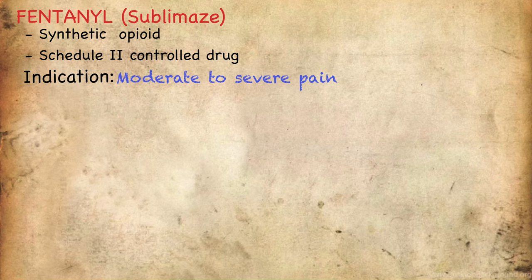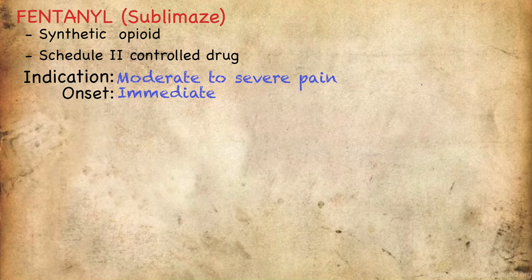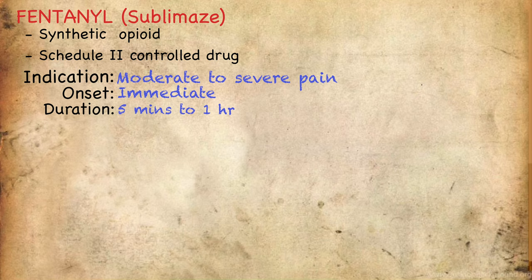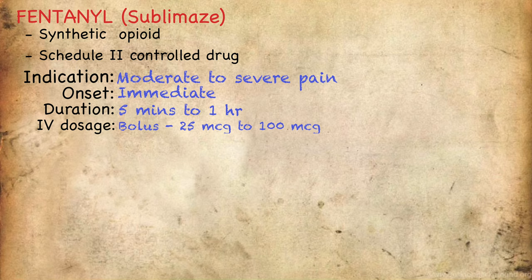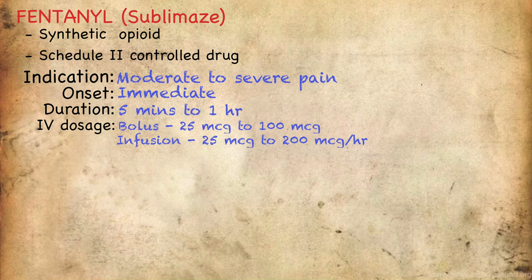Fentanyl can be administered intravenously, intramuscularly, or by transdermal patch, but in the ICU we often give the drug via IV. The onset is immediate with a duration of five minutes to one hour. It is mainly metabolized by the liver and excreted mostly via urine and some from feces. The bolus dosage ranges from 25 to 100 micrograms or 0.5 to 2 micrograms per kg. For continuous IV infusion, it ranges from 25 to 200 micrograms per hour or 0.5 to 2 micrograms per kg per hour.